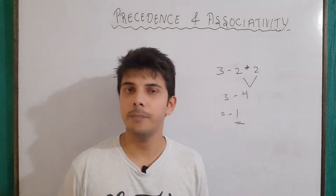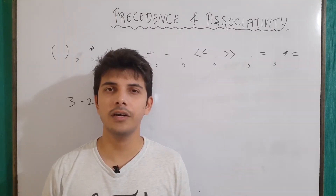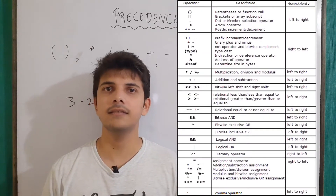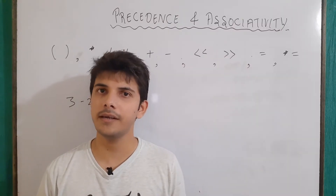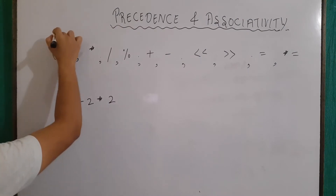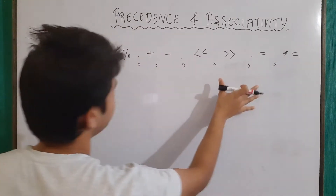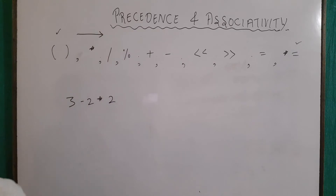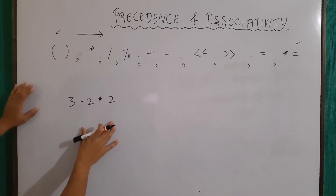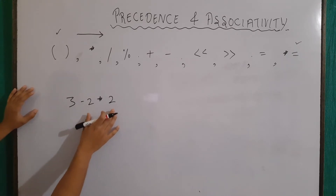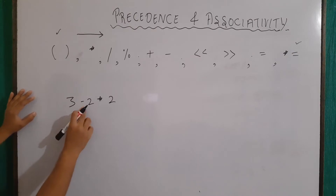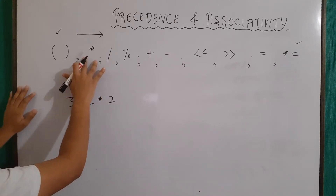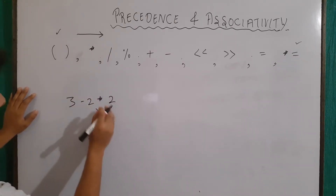Precedence is actually the priority of the operators. I have written many operators according to their precedence. There are more operators than this, but to understand the concept, this many operators are enough. We see the maximum priority is of parenthesis, and the minimum priority for this chart is asterisk equals to. The rule says that in an expression, the operator which is having the highest precedence will be evaluated first. There are two operators here: minus and asterisk. Asterisk has the higher priority, so these two operands will be evaluated first.